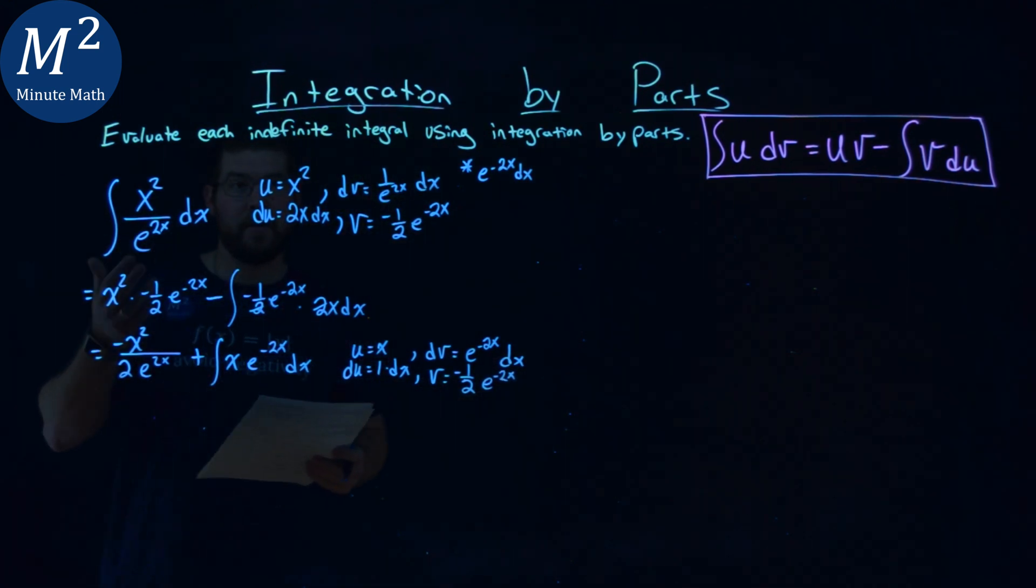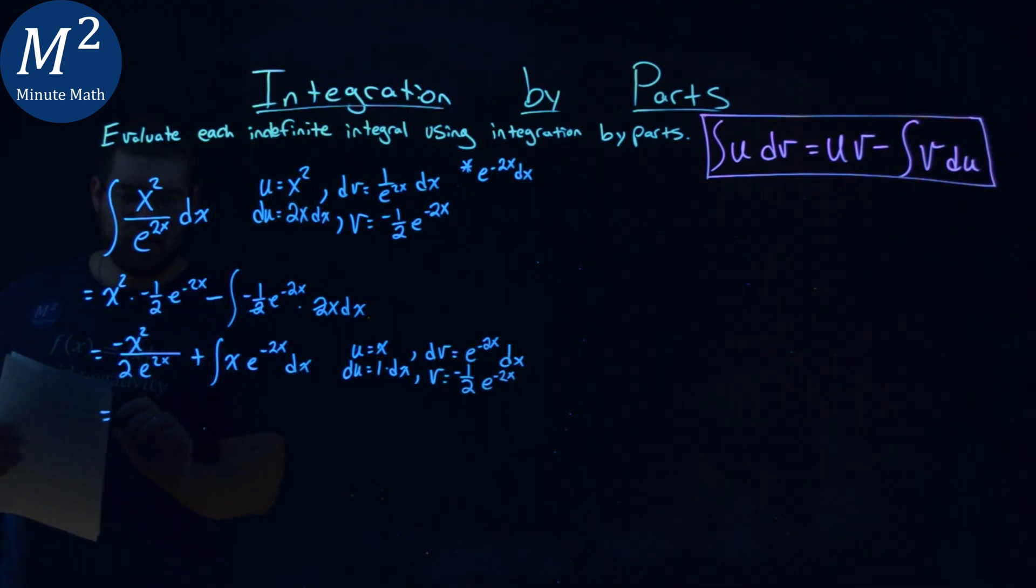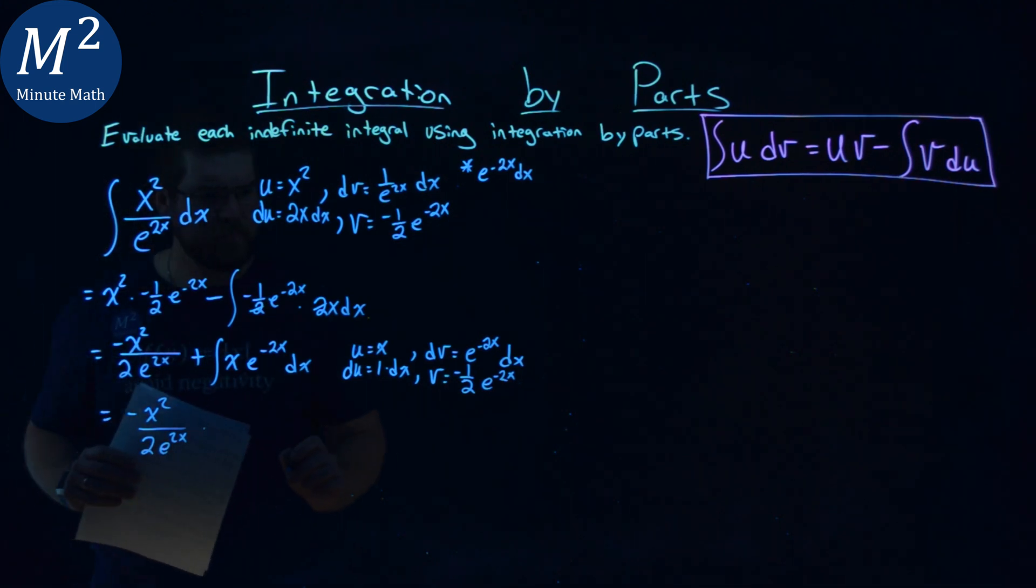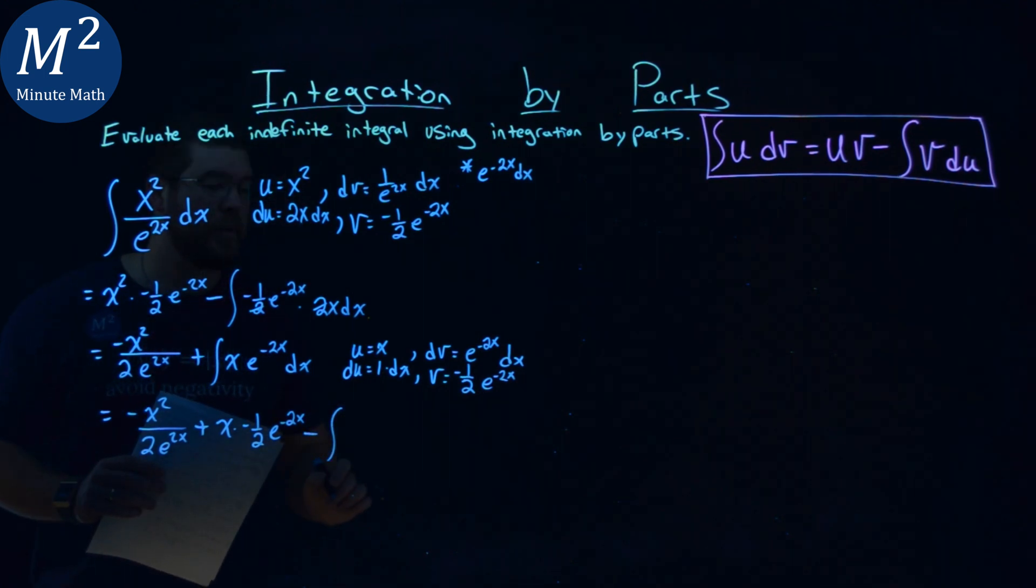So from here, we need to do integration by parts again. So we have negative x squared over 2 e to the 2x power, and we're going to use our formula again. u value being x times our v value, which is negative 1 half e to the negative 2x power,